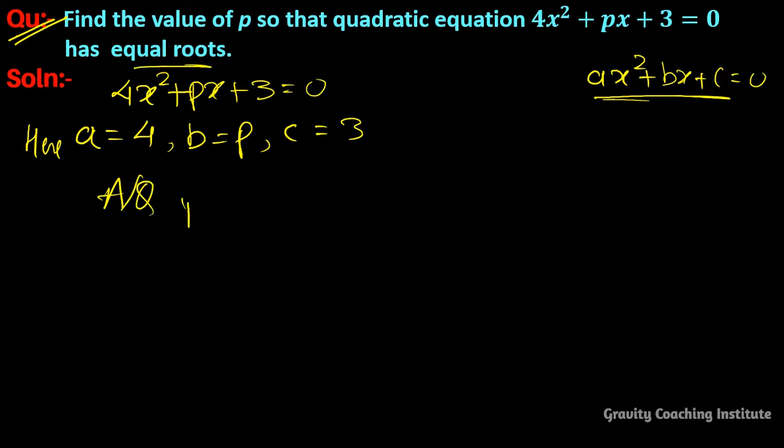So D = 0. And we know that the formula of D is b² - 4ac = 0. Now we put the value of a, b, c. So p² - 4 × 4 × 3 = 0.